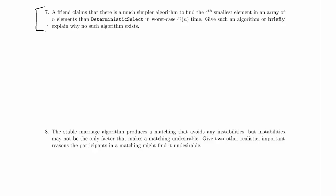We're working on part 7 of problem 3 in the practice final exam. A friend claims that there is a much simpler algorithm to find the fourth smallest element in an array of n elements than deterministic select in worst-case linear time. Give such an algorithm or briefly explain why no such algorithm exists.